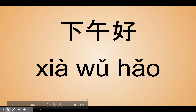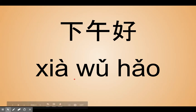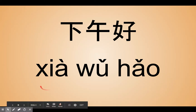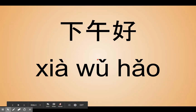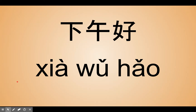This next one — remember that the X has a XI sound in Mandarin, and you have learned this with me in the first lesson. 下 — think of this as XI-a. 下午好 — good afternoon. 下午 is afternoon, and 好 is good. 下午好.